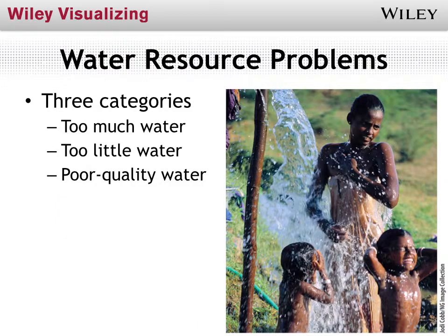We can have water problems from too little water — which is what we're worried about now in California, way under average rainfall. Snowpack in the mountains that feeds the streams is going to be really low, and water stored in reservoirs is way down. That can potentially have a huge impact on the environment, let alone all of the other demands humans have for water. That's typically what we worry about in this country: not having enough water.